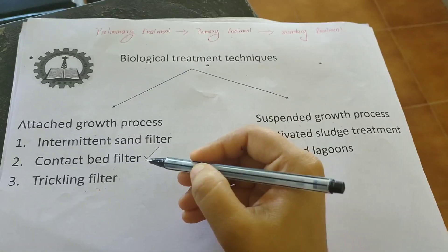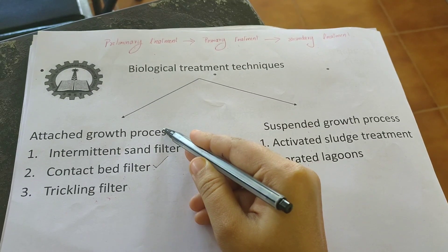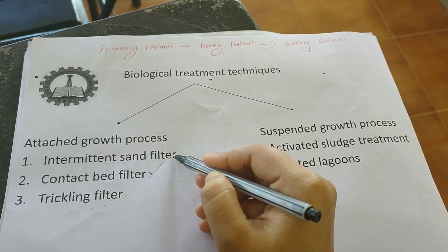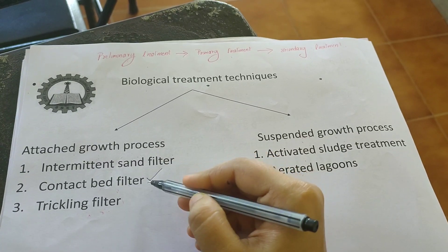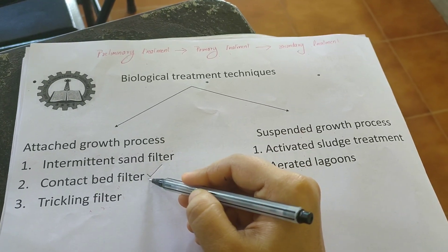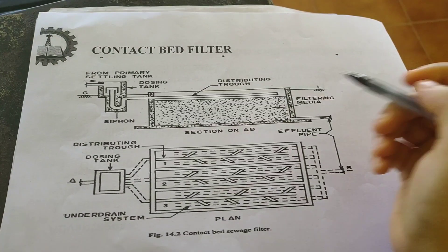So now we can discuss the contact bed filter, which is an example of an attached growth process. We have already discussed intermittent sand filter, so now let us have a look at what is a contact bed filter.